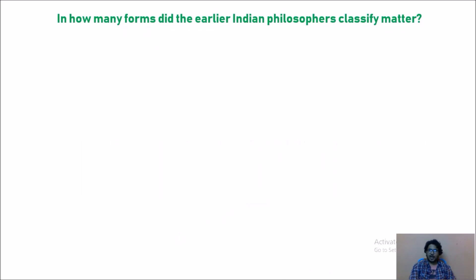In how many forms did the earlier Indian philosophers classify matter? That is a question. Try to answer this question. You have four options: three types, four types, five types, and six types. So what is the correct answer? Yes, what you have thought is correct, that is five. We have studied about pancha tattvas.